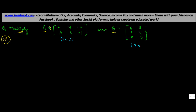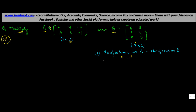The condition for multiplication of two matrices is that the number of columns in A should be equal to the number of rows in B. This condition is satisfied here: the number of columns in A is equal to three and the number of rows in B is also equal to three.